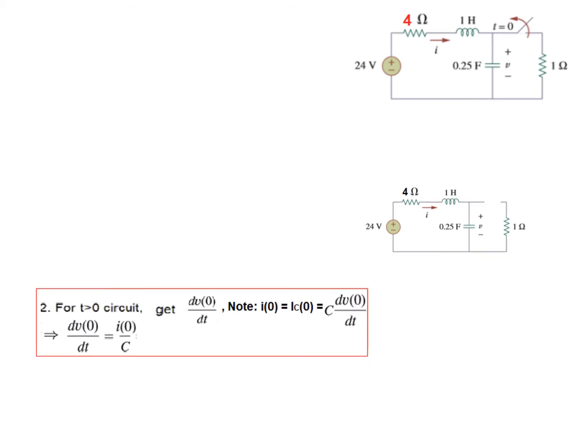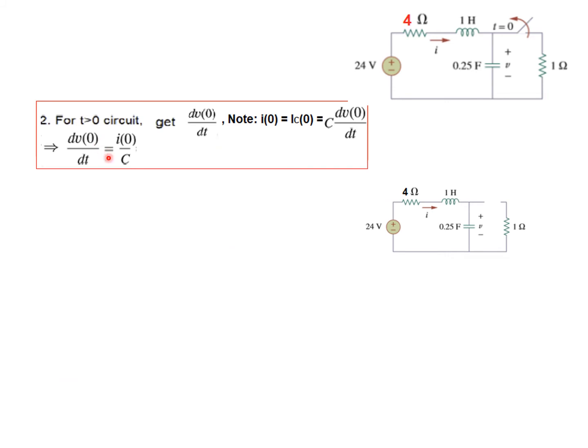In the second step we have to find dV0/dt which is I0 over C. So we will just simply plug in the values of I0 and C. Not much concern with the circuit right now. We are plugging in. dV0/dt is 19.2 volt per second.